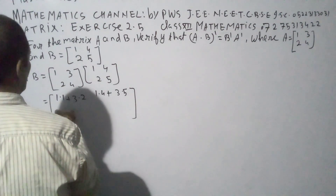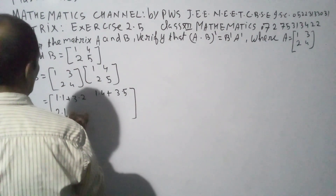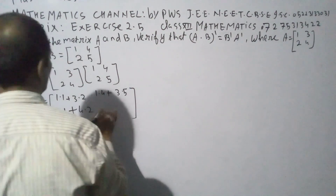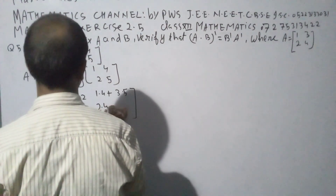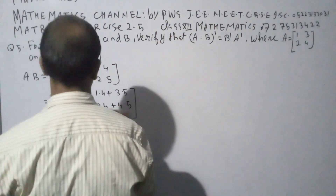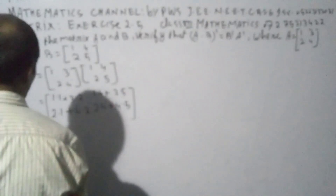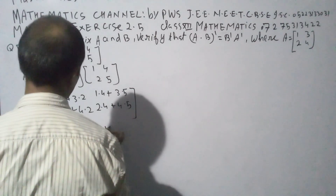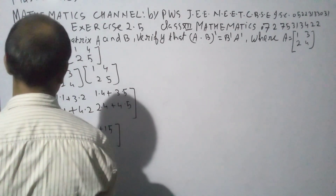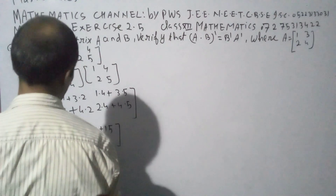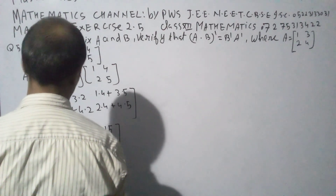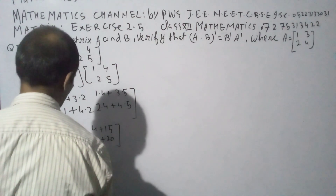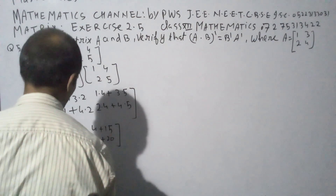For the second row: 2 into 1 plus 4 into 2, and 2 into 4 plus 4 into 5. Computing these: 1 plus 6, 4 plus 15, 2 plus 8, 8 plus 20. So AB is equal to 7, 19, 10, and 28.